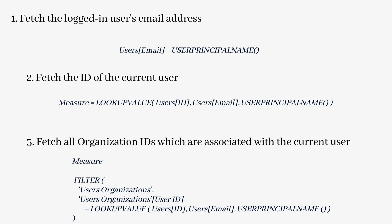The next step is to fetch all organization IDs associated with the current user. In order to do that, you have to filter the users organization table. To achieve step 3, we filter the users organization table's user IDs using the DAX expression from step 2 — that means using LOOKUPVALUE to get all user IDs corresponding to the user who has logged in. That's how we filter the users organization table and get all organization IDs associated with the current user.